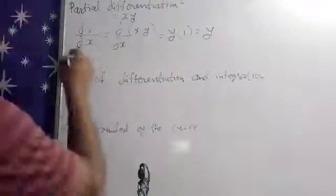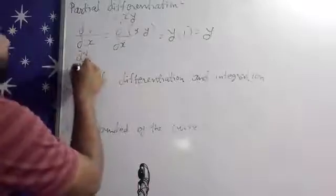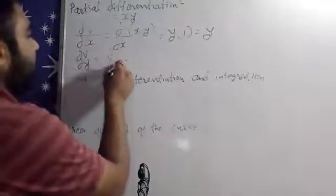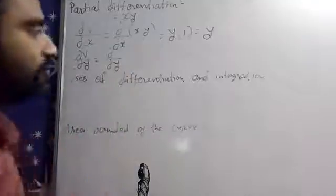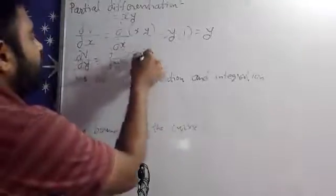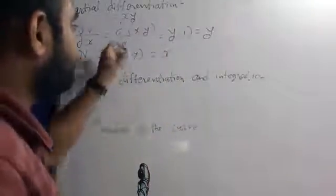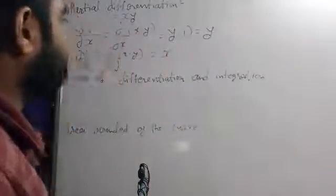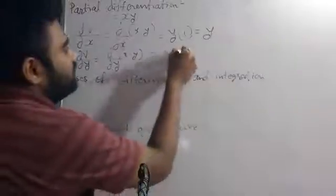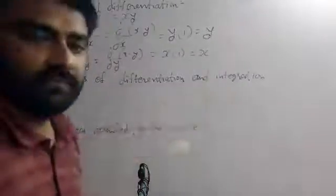Similarly, if we have partial differentiation with respect to Y — again the same logic. Now it is with respect to Y, so in X into Y, the constant term is nothing but X. Because differentiation is with respect to Y, del Y upon del Y becomes one, and we are left with the answer X.